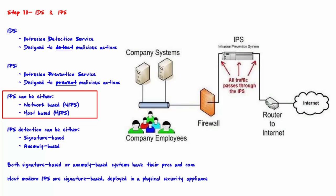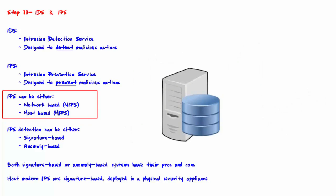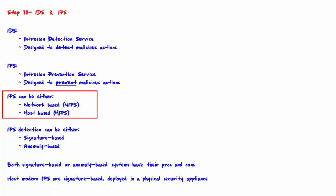IPS can be either network-based (NIPS) or host-based (HIPS). Network-based NIPS monitors the entire network for malicious traffic by analyzing all TCP/IP traffic entering the network. Host-based HIPS monitors a single host for malicious activity, usually for unauthorized changes. NIPS requires that IPS be installed on an appliance at the network perimeter, such as on a firewall. HIPS requires that IPS be installed on every host that requires protection, and is usually only installed on specific servers.